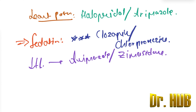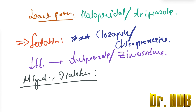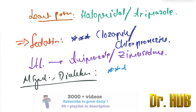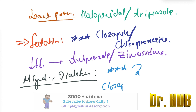Then we move on to metabolic syndrome and diabetes. In terms of high potential, clozapine as well as olanzapine carry the highest risk for metabolic syndrome and diabetes.